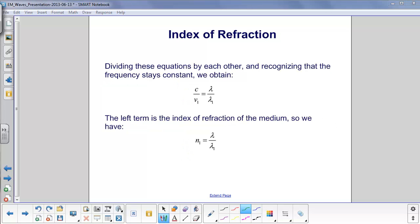We took those two equations from the previous slide, divided them by each other, and realizing that the frequency stays constant, we come up with C divided by V1 is lambda over lambda 1, where lambda 1 and V1, that's the wavelength and velocity of light in this new media.